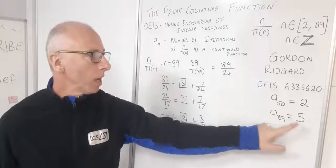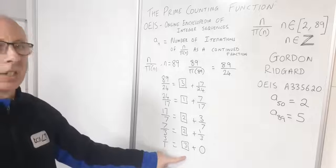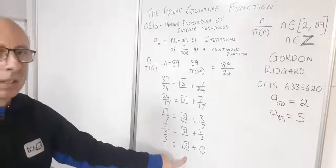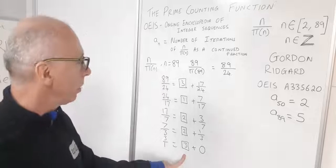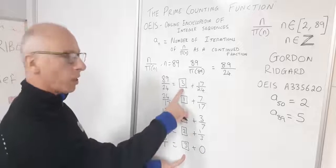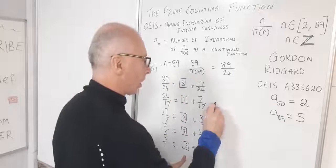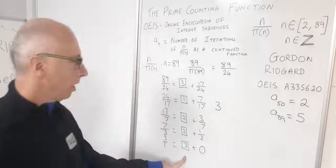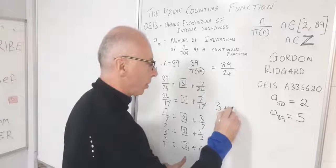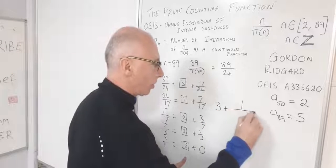Now we're going to write this as a continued fraction and see what it looks like. So let's write this as a continued fraction. We start off with our first integer. So we have a 3 and then we're going to add the reciprocal of 1 over something.